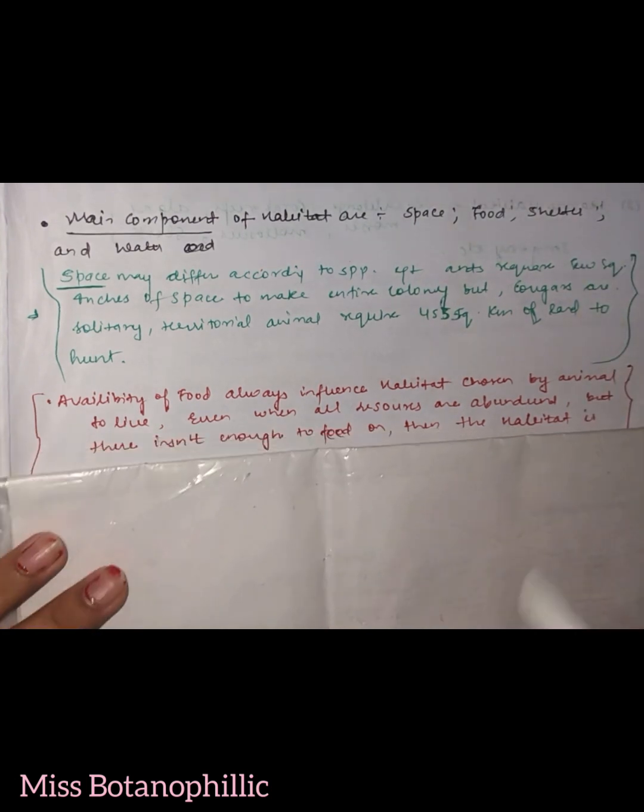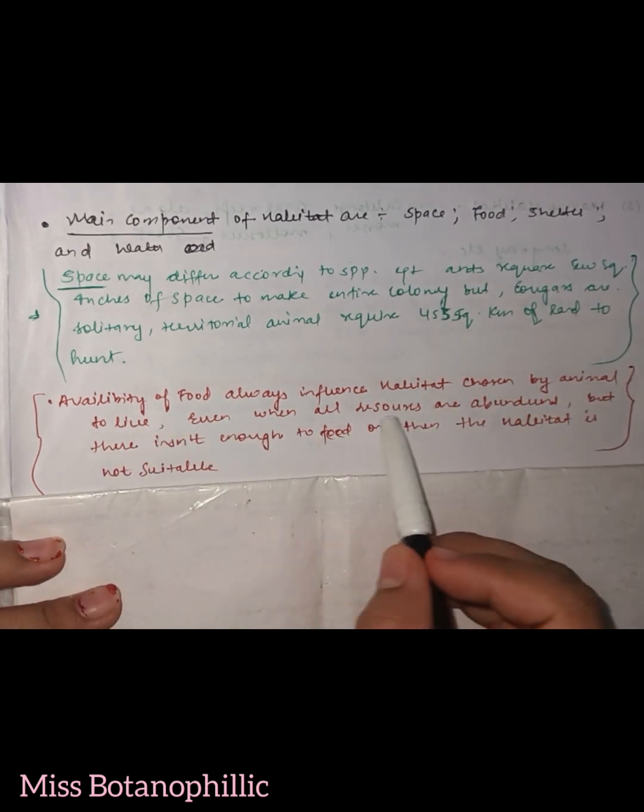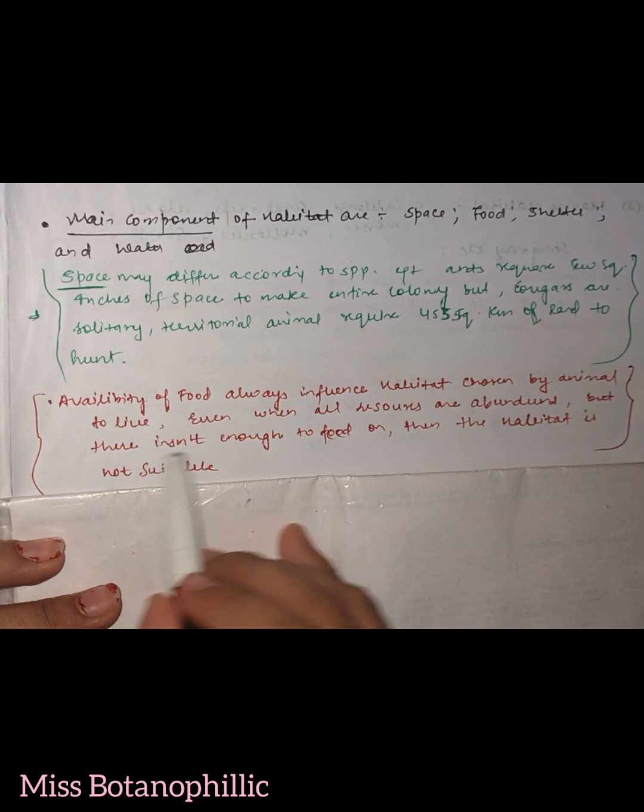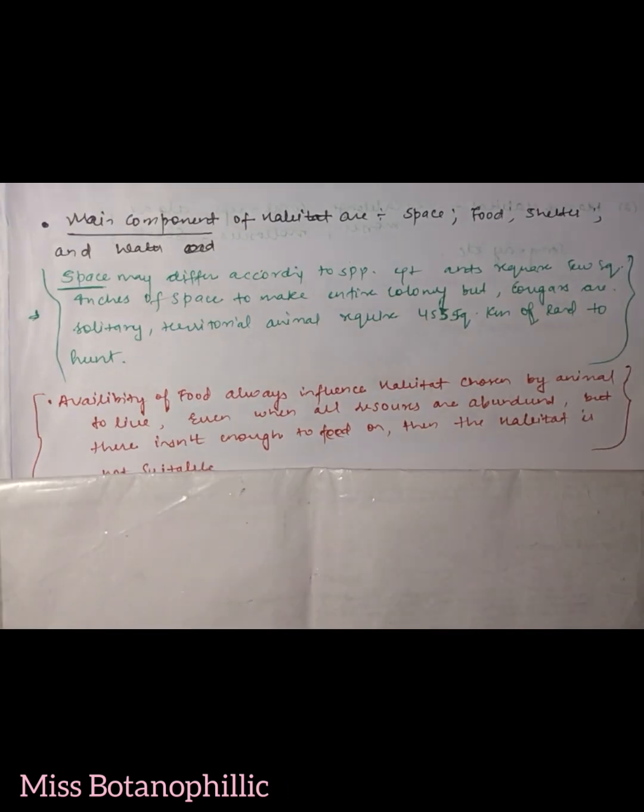Availability of food always influences the habitat chosen by the animal to live. Even when all the resources are abundant, but there isn't enough food to feed on, then this habitat is not suitable. It depends on the organism that space, food, shelter, water - these are the forming components.